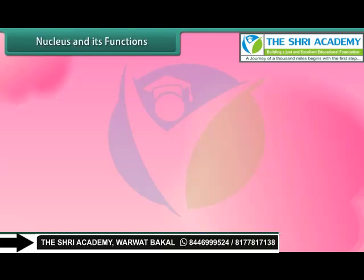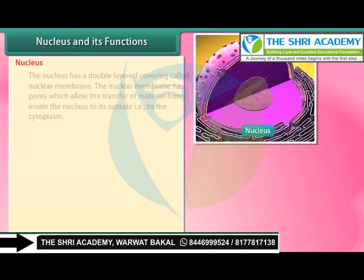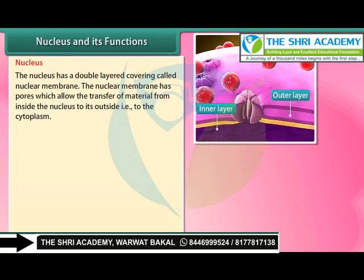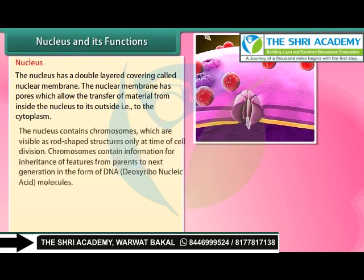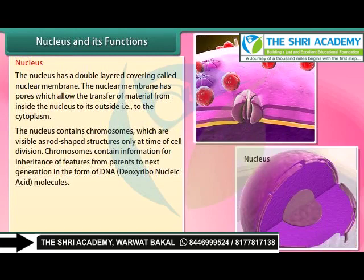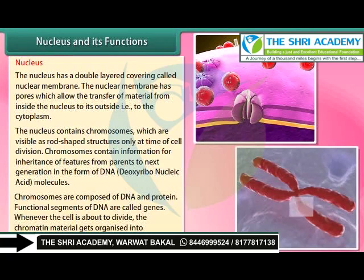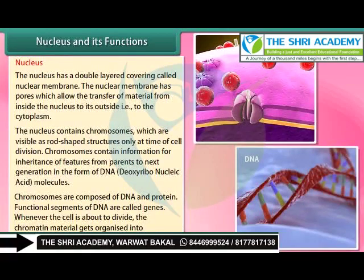The nucleus has a double-layered covering called the nuclear membrane, which has pores that allow the transfer of material from inside the nucleus to the cytoplasm. The nucleus contains chromosomes, which are visible as rod-shaped structures only at the time of cell division. Chromosomes contain information for inheritance of features from parents to the next generation in the form of DNA — deoxyribonucleic acid. Chromosomes are composed of DNA and protein; functional segments of DNA are called genes.